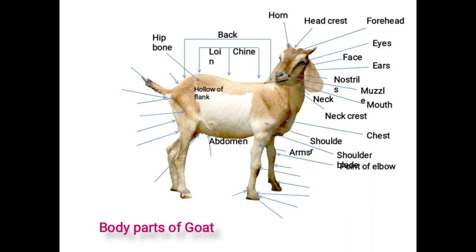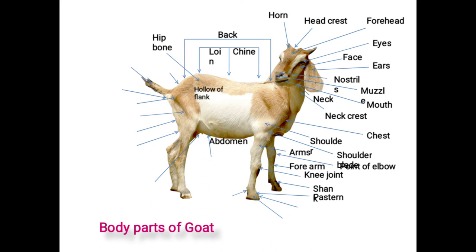Next is the forearm or elbow: the portion between the point of elbow and knee joint. Knee joint: the joint between the forearm and shank. Next is the shank: the portion between the knee and pastern. Last is the pastern: the position between the shank and fetlock.